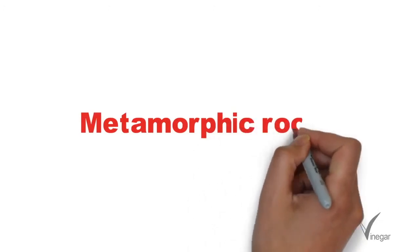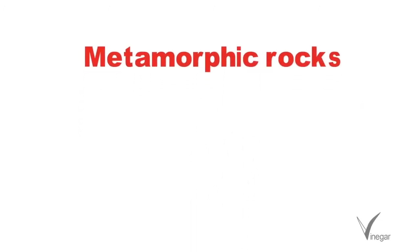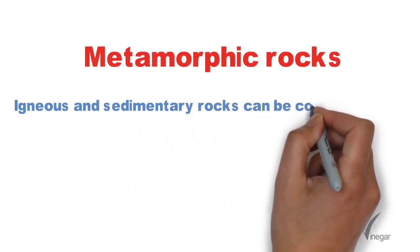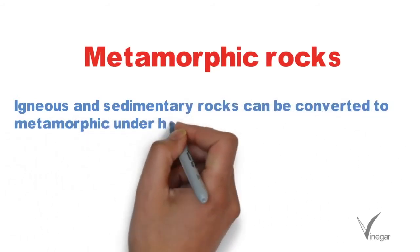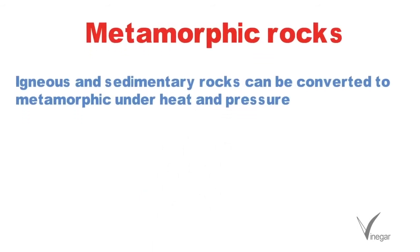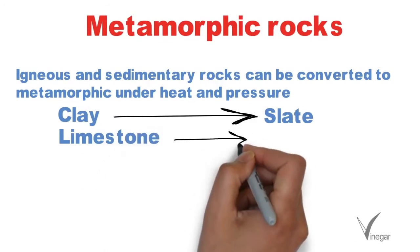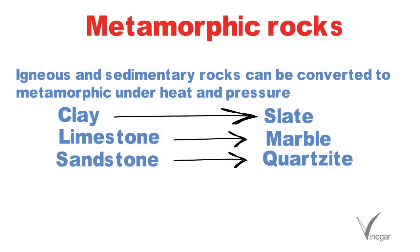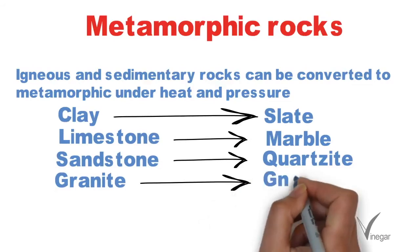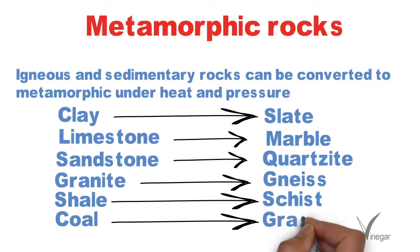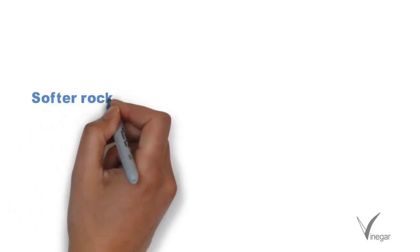Igneous or sedimentary rocks can be converted into metamorphic rocks if sufficient heat and pressure is applied. Their original character and appearance changes considerably because of this process. For example, clay can become slate, limestone can become marble, sandstone can become quartzite, granite can become gneiss, shale can become schist, and coal can become graphite.